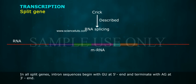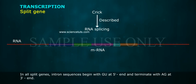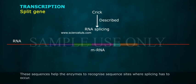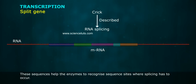In all split genes, intron sequences begin with GU at the 5' end and terminate with AG at the 3' end. These sequences help enzymes to recognize the sites where splicing has to occur.